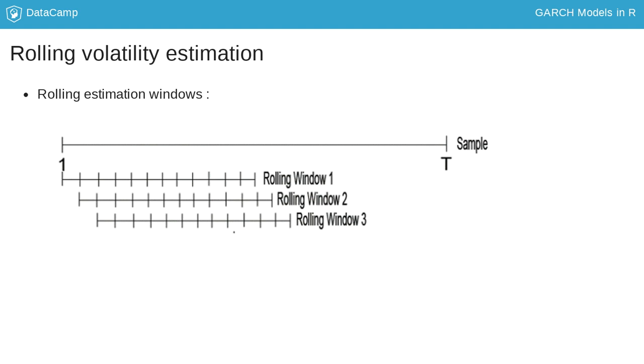The practical question is then to choose the length of the estimation window. Typically, the window is a multiple of 22, which is the number of trading days in a month.